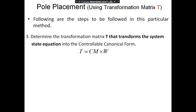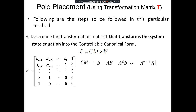We then determine the transformation matrix T that transforms the system state equation into controllable canonical form. If the system is not already in controllable canonical form, we transform it. If it already is in controllable canonical form, then T equals the identity matrix. The transformation matrix is given by T = CM · W, where CM is the controllability matrix and W is constructed from the characteristic polynomial coefficients. The first row of W is [a_(n−1), a_(n−2), ..., a₁, 1].